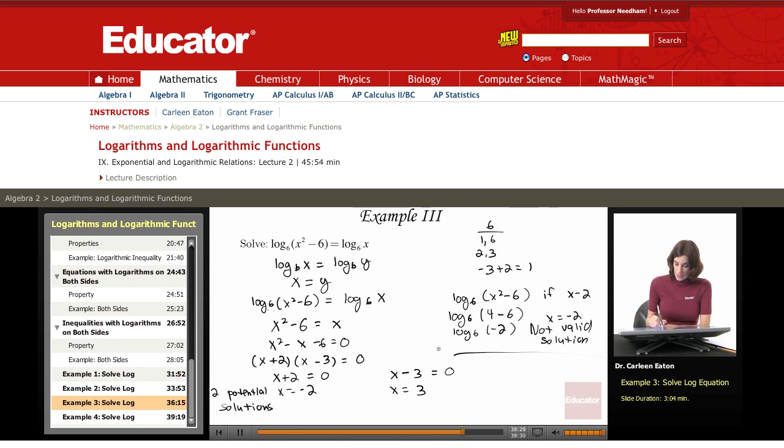Let's try x equals 3. Well, if x equals 3 and I take the log base 6 of 3, that's okay. Let's check this one out. Log base 6 of x squared minus 6. Log base 6, and we're letting x equal 3 here, of 3 squared minus 6. So that's log base 6 of 9 minus 6 or log base 6 of 3, which is positive. That's allowable. Log base 6 of 3 is allowable. So these are both allowable.